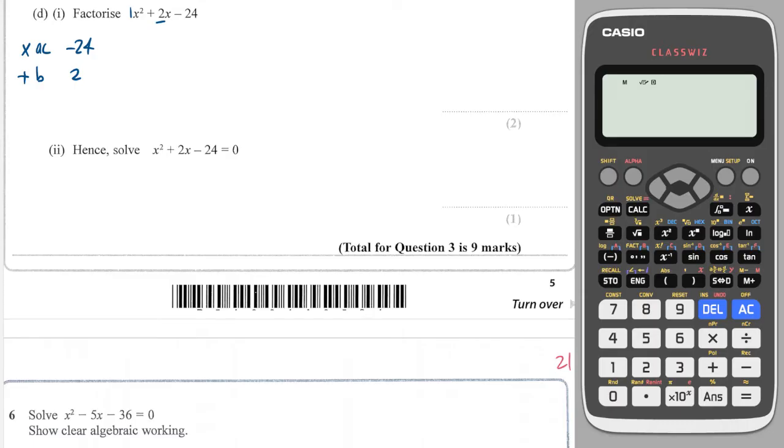So those two numbers are plus 6 and minus 4. That works, they multiply together to make minus 24 and add together to make 2. So to factorise, I just write x plus 6, x minus 4.